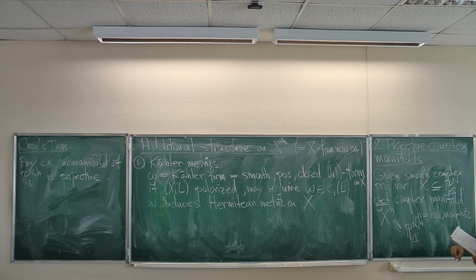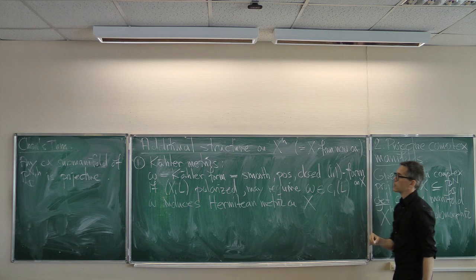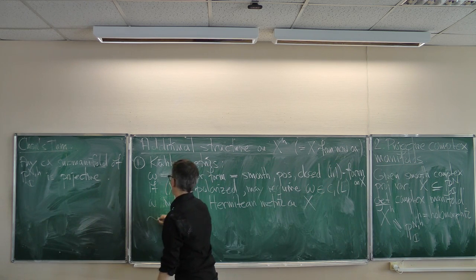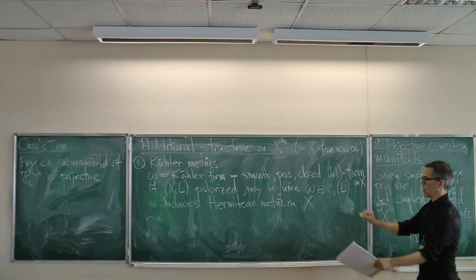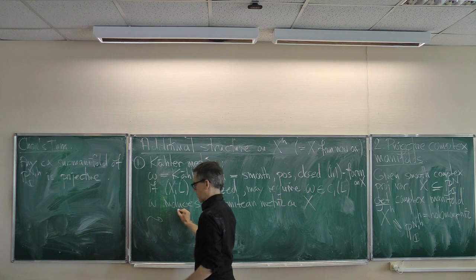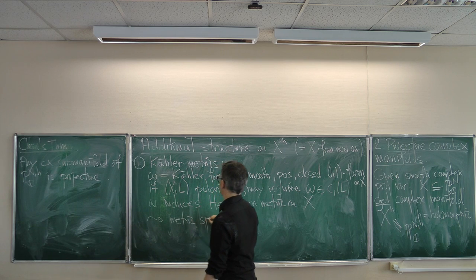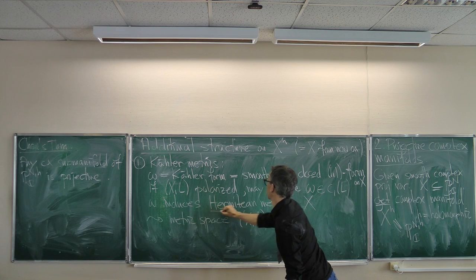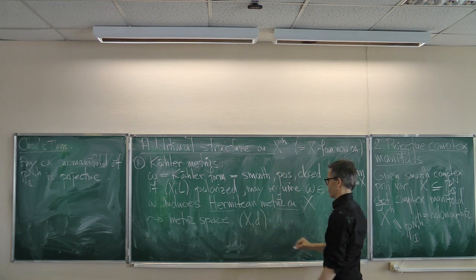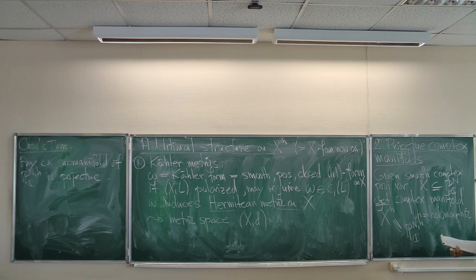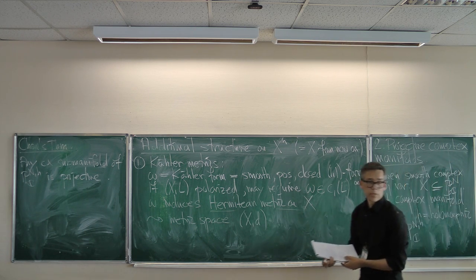Once you have a Kähler form, it induces a Hermitian metric on X — a Hermitian inner product on each tangent space varying smoothly. Roughly speaking, this gives X the structure of a metric space.